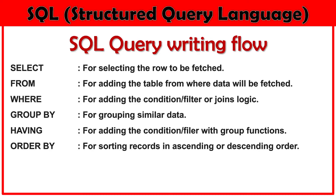The last clause is ORDER BY. ORDER BY defines the order of the data returned — we can show data in ascending or descending order. So the complete flow is: SELECT, FROM, WHERE, GROUP BY, HAVING, ORDER BY. The last four are not mandatory, but SELECT and FROM are mandatory.